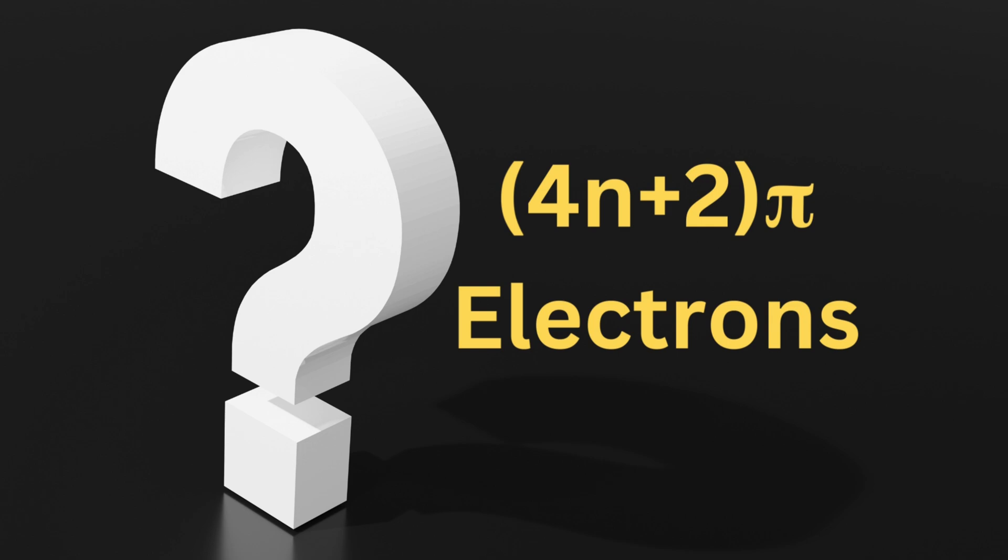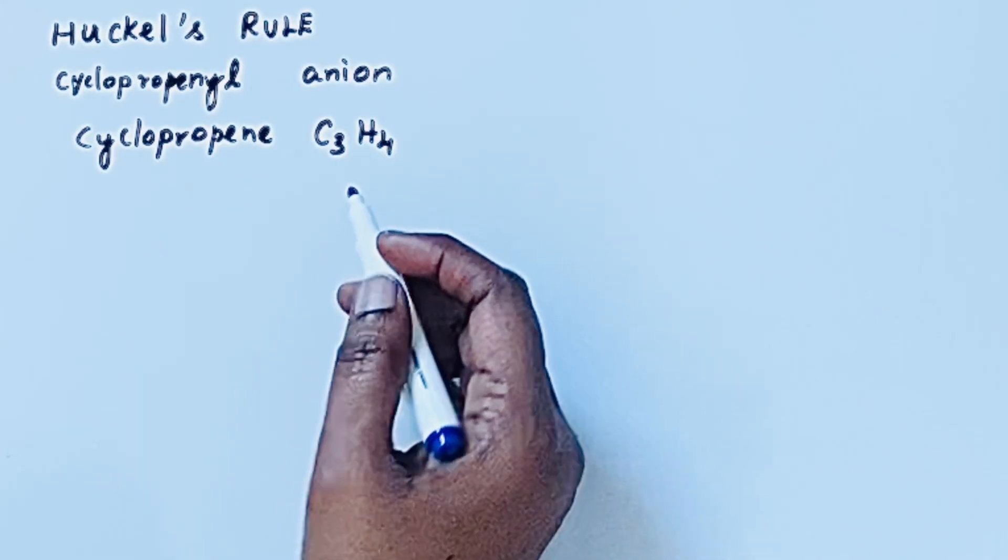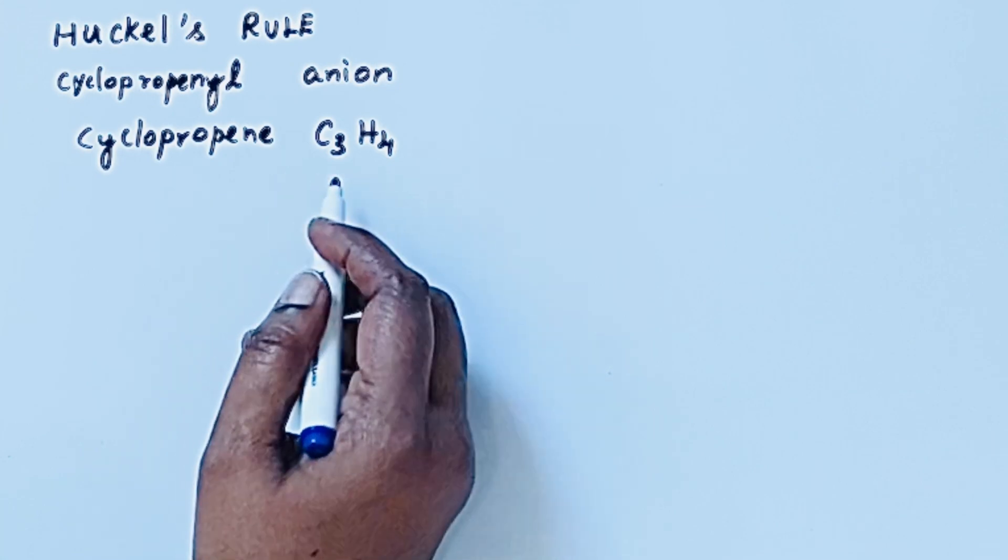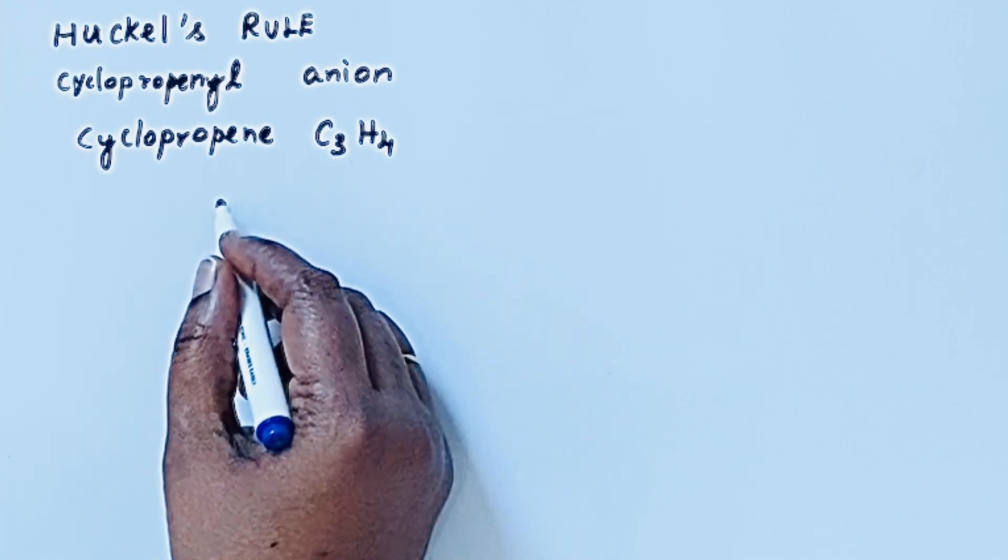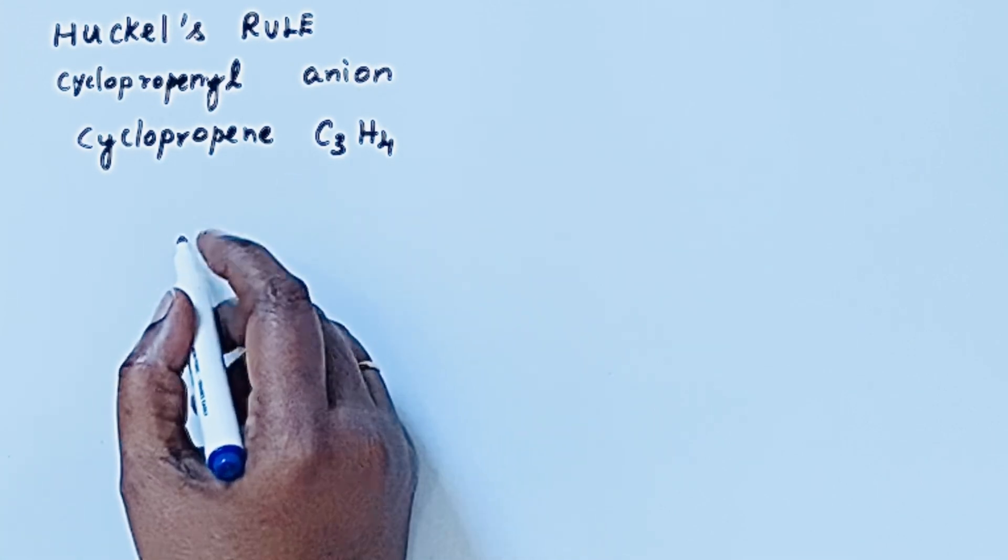For example cyclopropenyl anion, it is formed from cyclopropene. Its molecular formula is C3H4. So let us draw the structure first.